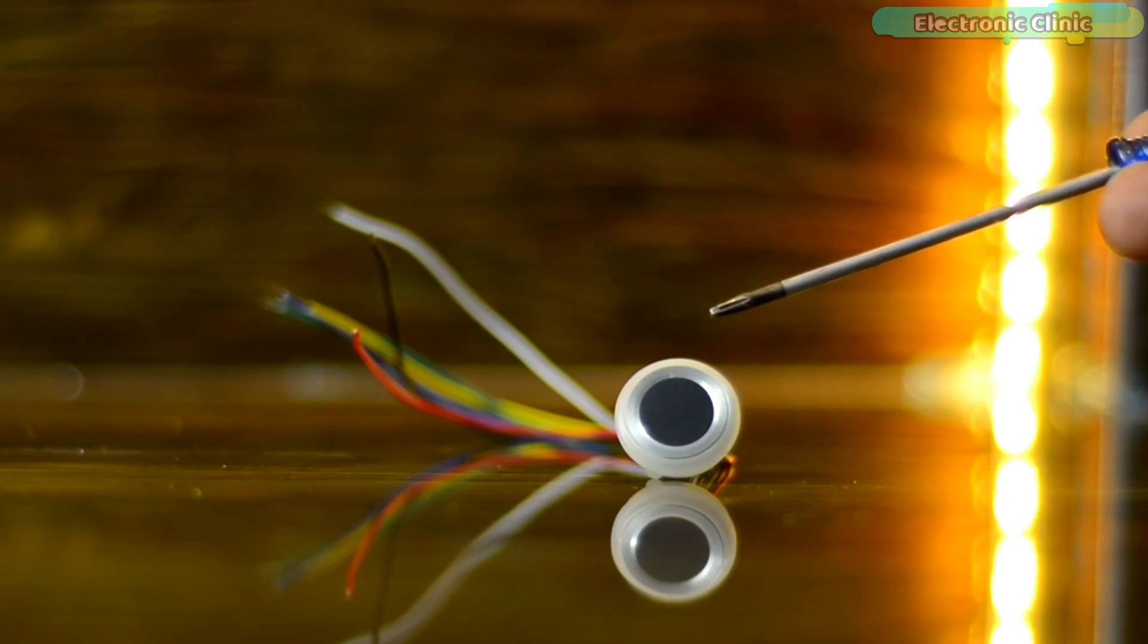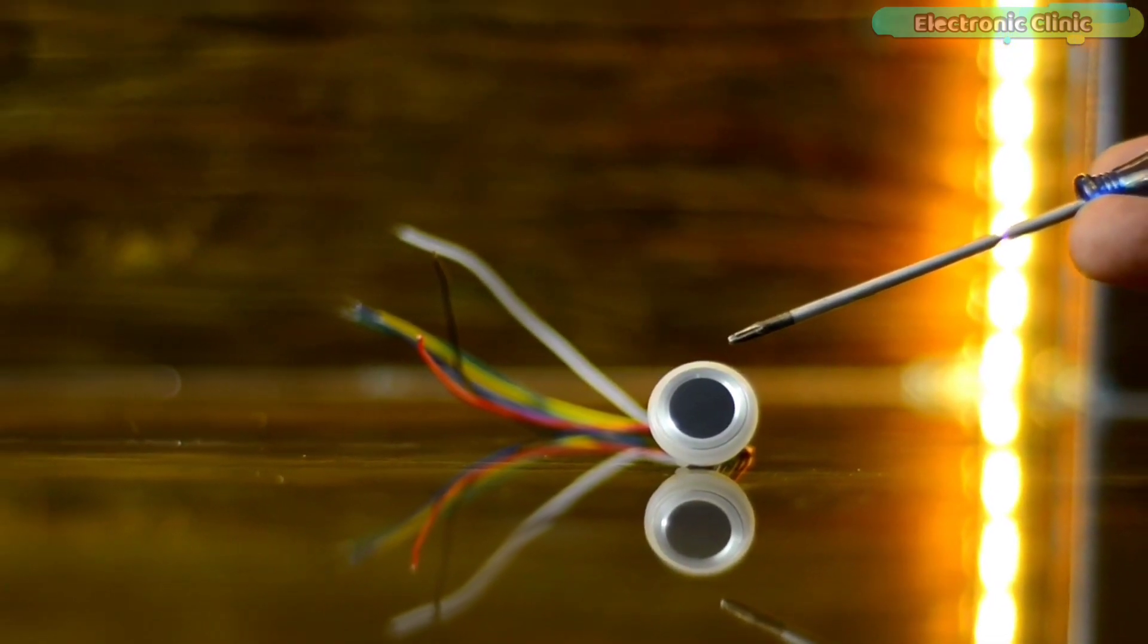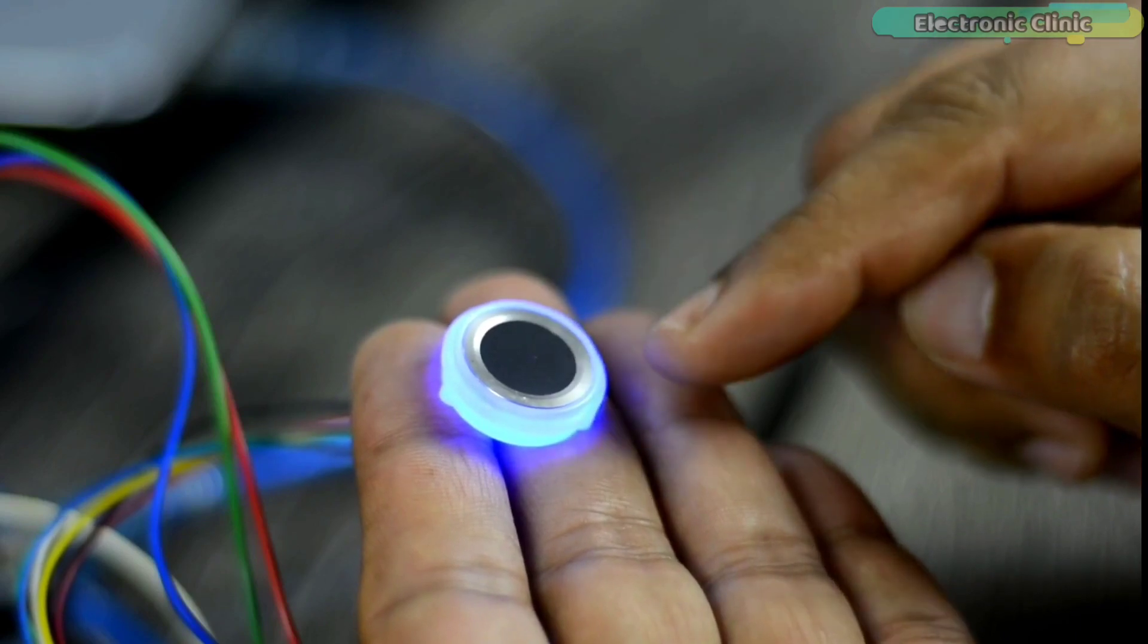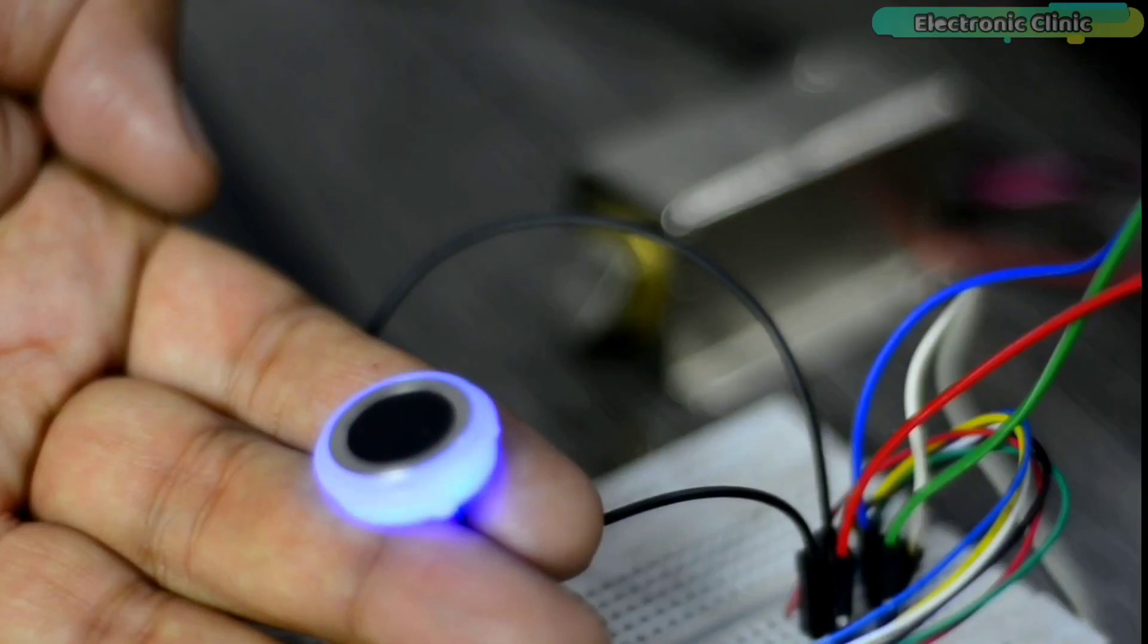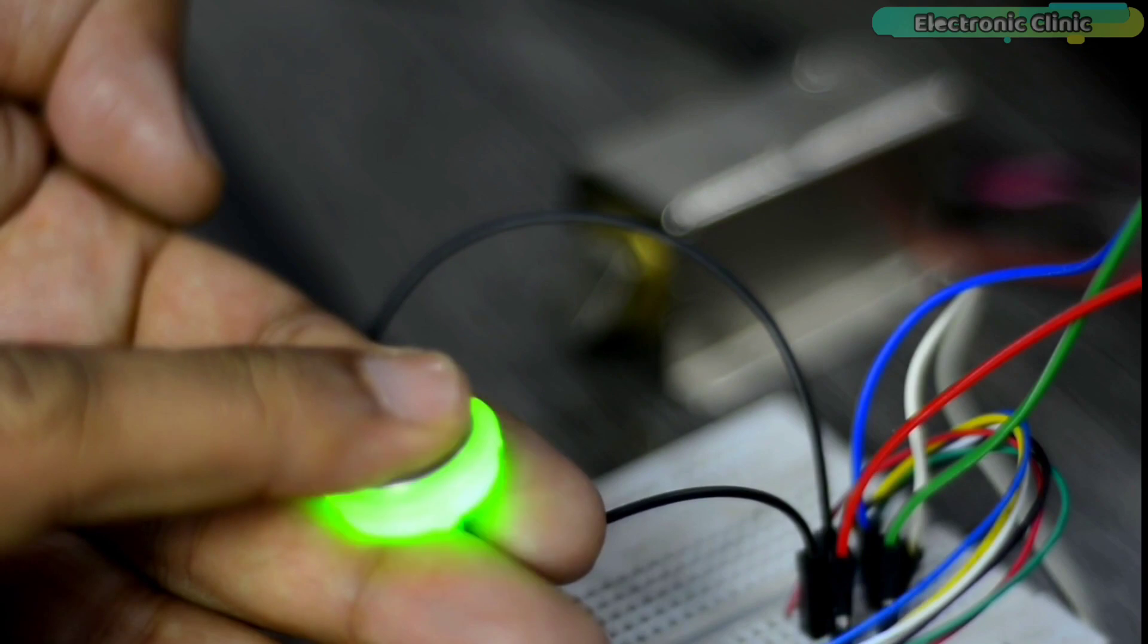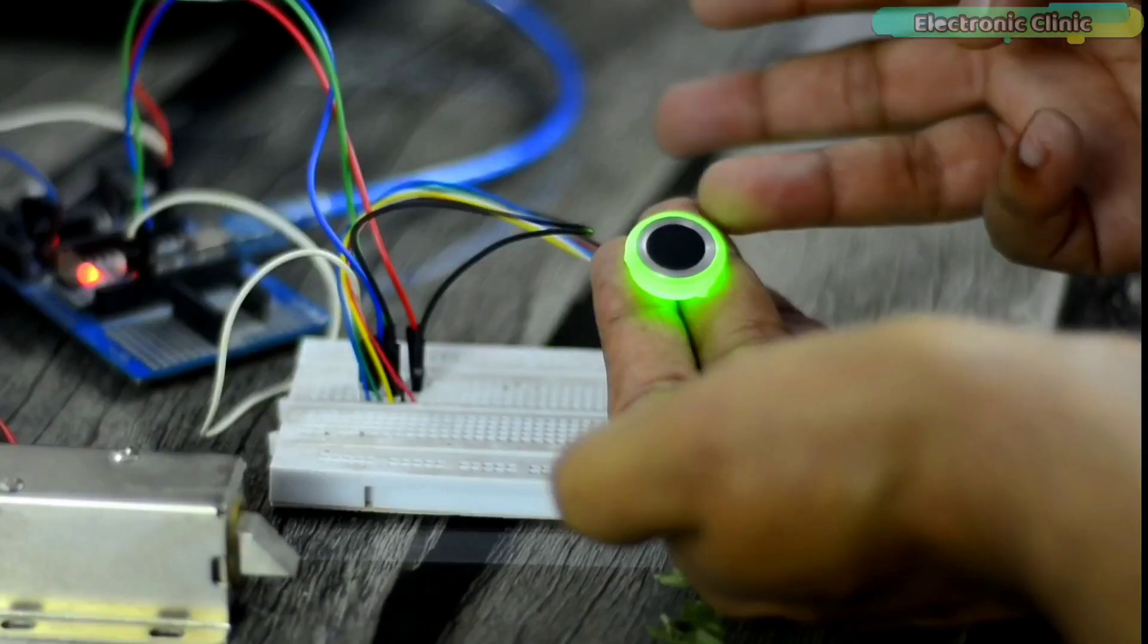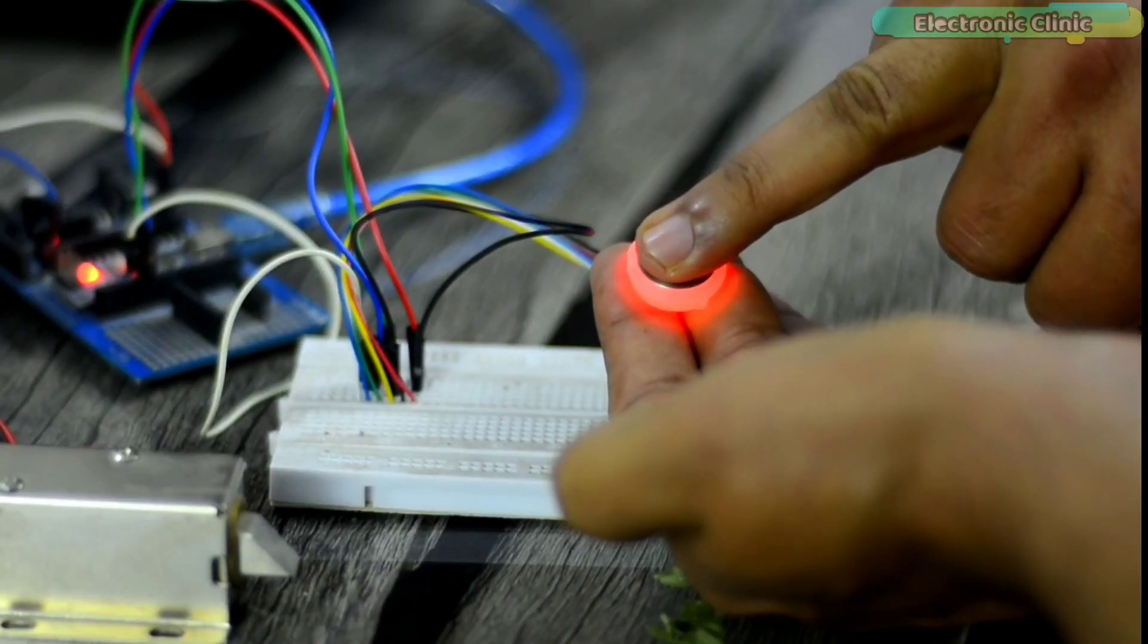There is an RGB LED inside this module. When the fingerprint sensor is on, it shows blue light. When the fingerprint scanning operation is successful, it shows green light, and when the operation fails, it shows red light.